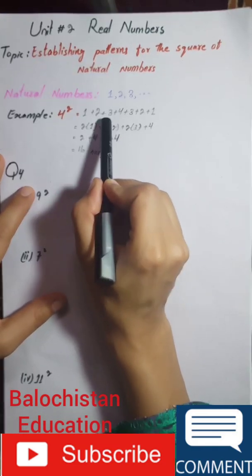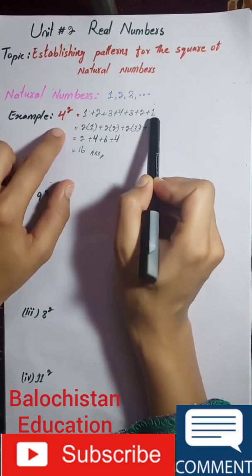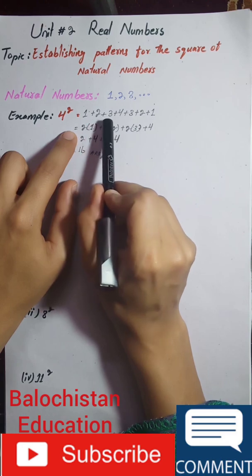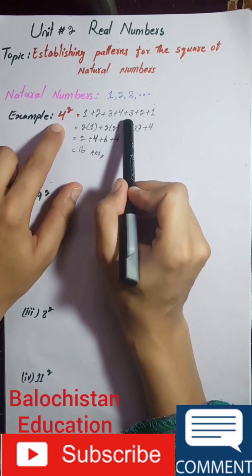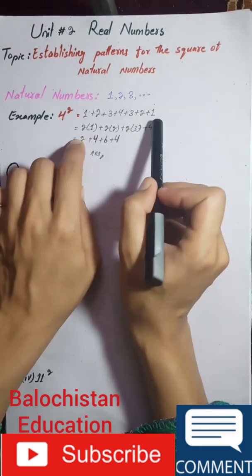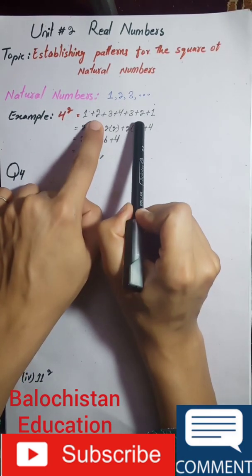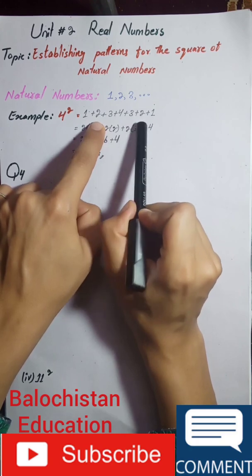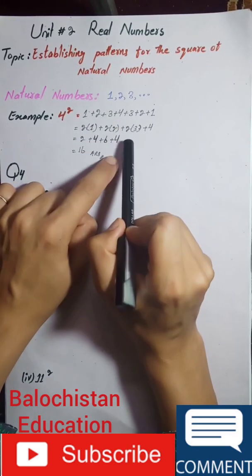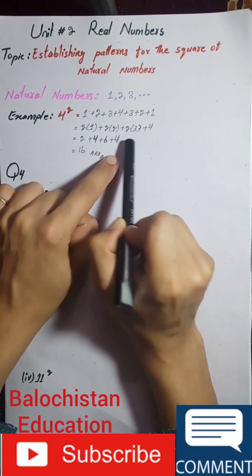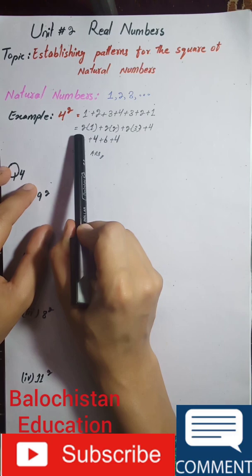First, you have to start from 1 plus 2 plus 3 plus 4 — this is 4, that's why we go to 4 — and then go back down plus 3 plus 2 plus 1. Start from the smallest number, go a little bigger, reach the number we have, and go back again. Now see how many 1s we have: we have 2 ones, therefore we multiply 1 with 2. Then how many 2s do we have? There are 2 twos, so we multiply 2 with 2.